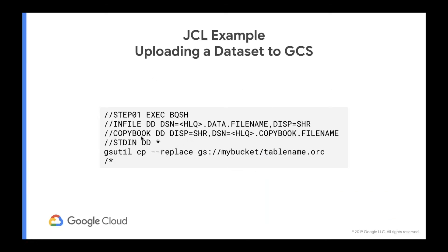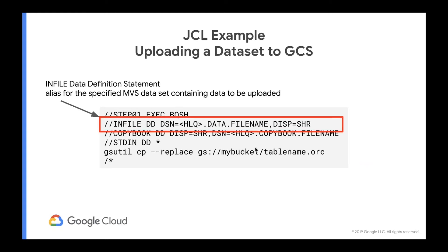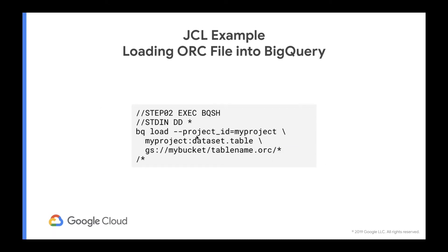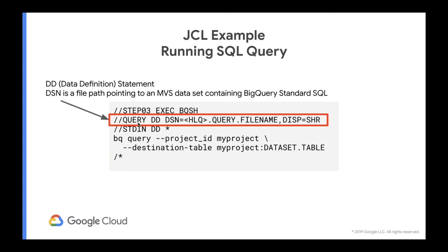This is a more complete example. We've got our in-file pointing to the data, a copy book that defines the schema of this data, and then we specify where we want to put it — it's going to be an ORC file. After that's done, your dataset will be in cloud storage, readable from BigQuery, Hadoop, or any system that supports the ORC format. Then you can either load it as a table by pointing to the file you just uploaded, or once it's loaded as a table you can provide a dataset with a SQL query inside. The arguments look identical to what you'd use running this from Linux.